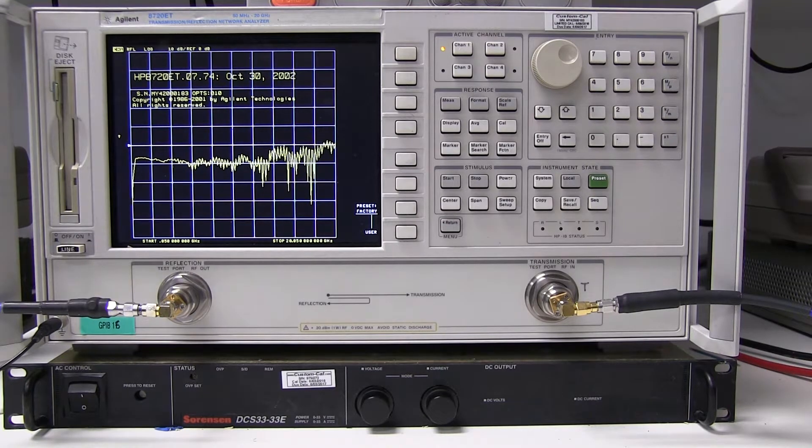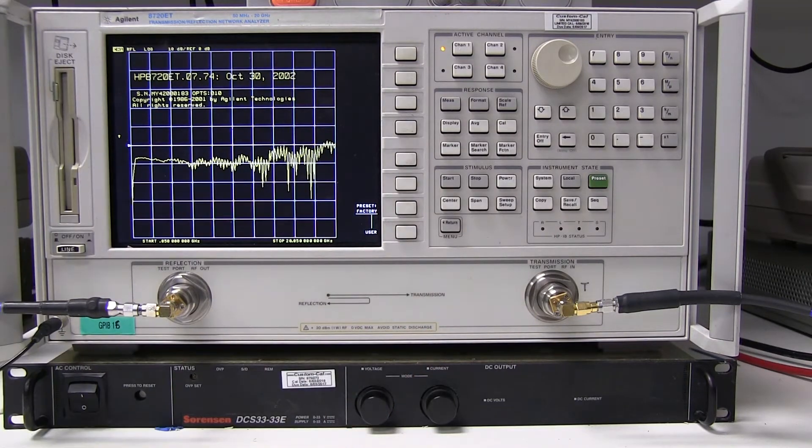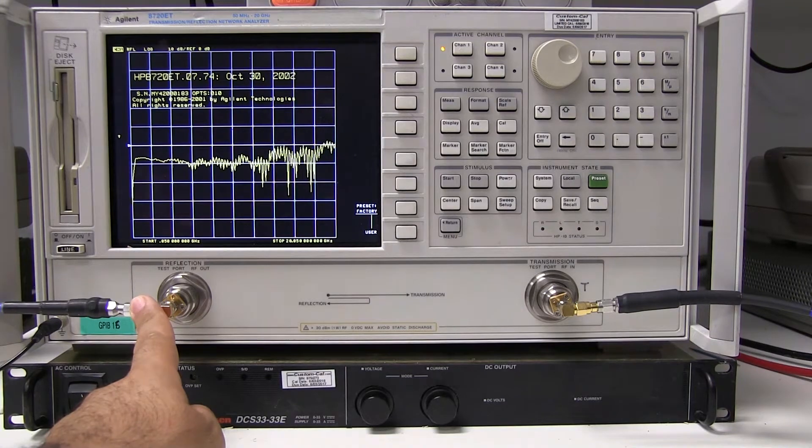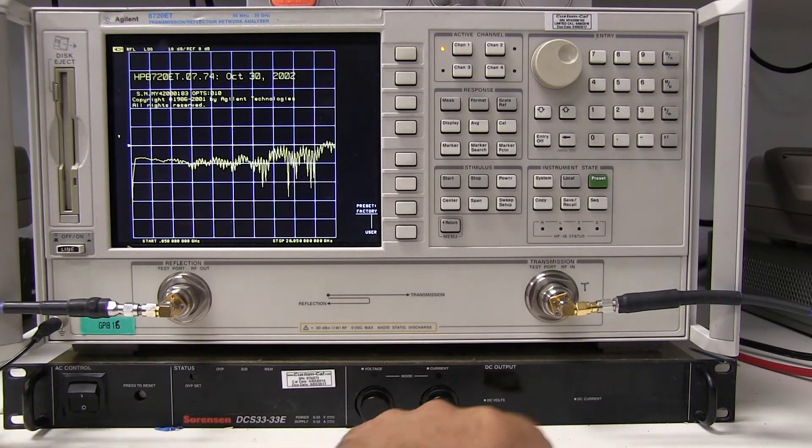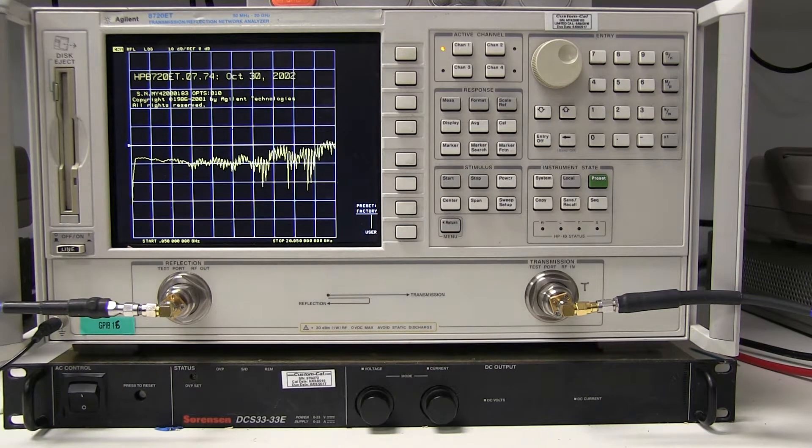This one is set up as a transmission reflection network analyzer. It operates up to 20 gigs, but what the transmission reflection setup is, is that it's only configured to measure transmission in this direction, which means it will perform an S21 measurement, but not an S12 measurement. So it can measure the gain this way, but not the gain in the reverse direction.